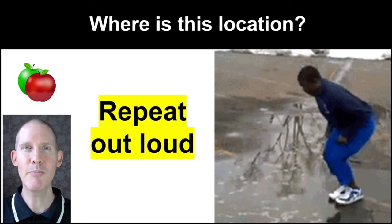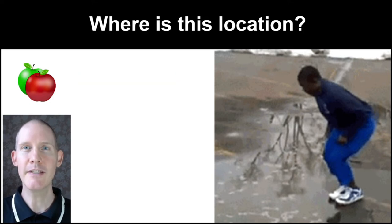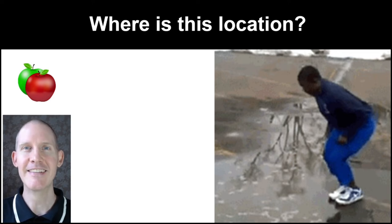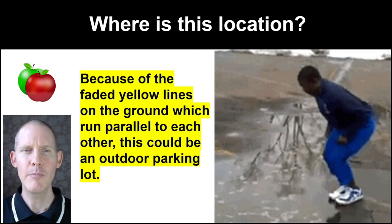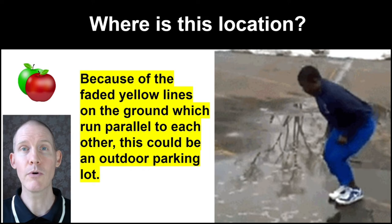Repeat out loud — let's do pronunciation. Where is this location? Because of the faded yellow lines on the ground which run parallel to each other, this could be an outdoor parking lot.